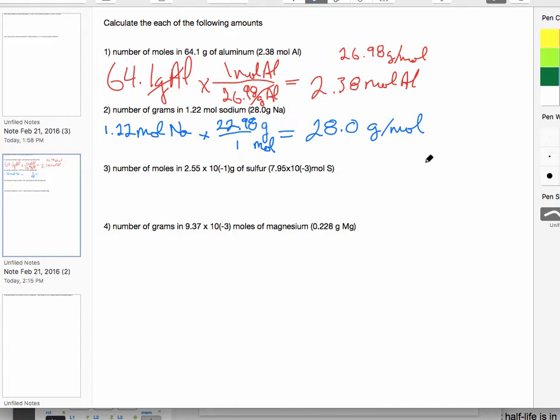And we'll do a couple more just with a little bit of scientific notation in them to help you understand a little better. This one reads, number of moles in 2.55 × 10^-1 grams of sulfur. So let's go down here, and we're going to write in 2.55 × 10^-1 grams of sulfur. And we want to convert that to moles of sulfur, so we'll say, whatever we do, we're putting grams on the bottom, and we're going to put moles on the top.